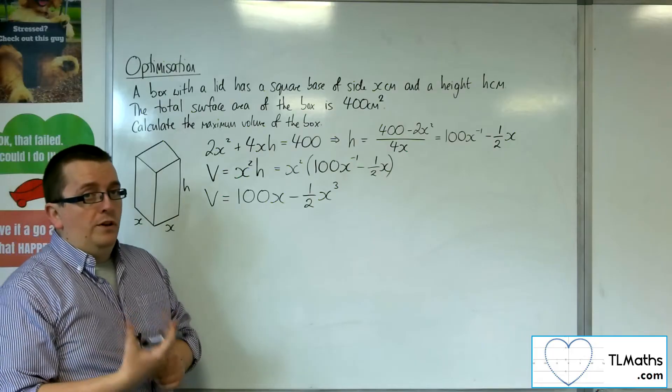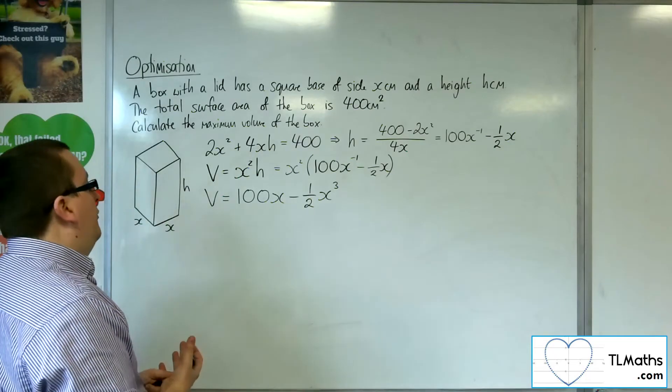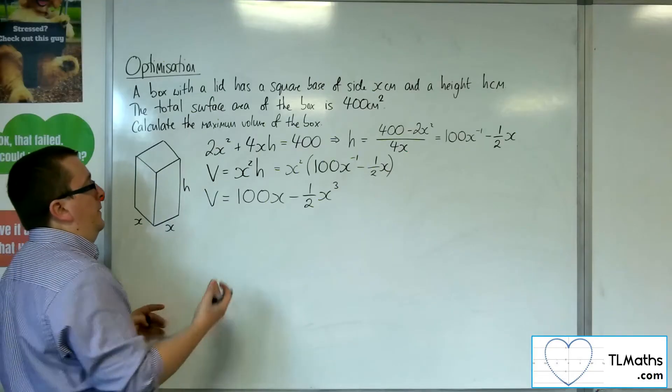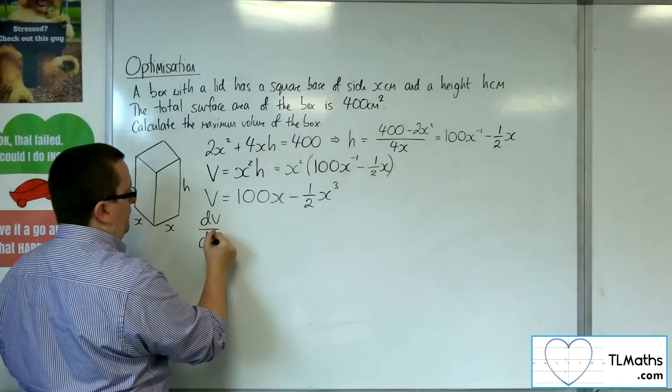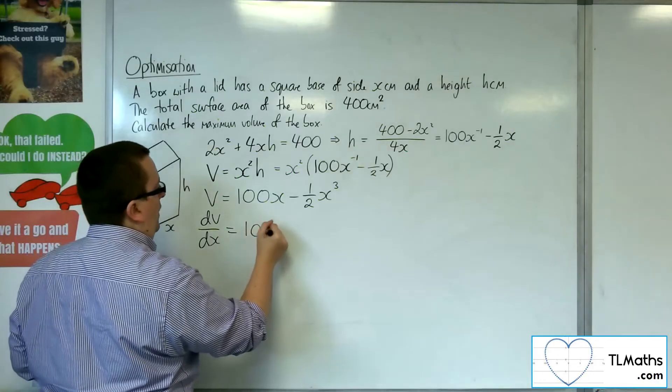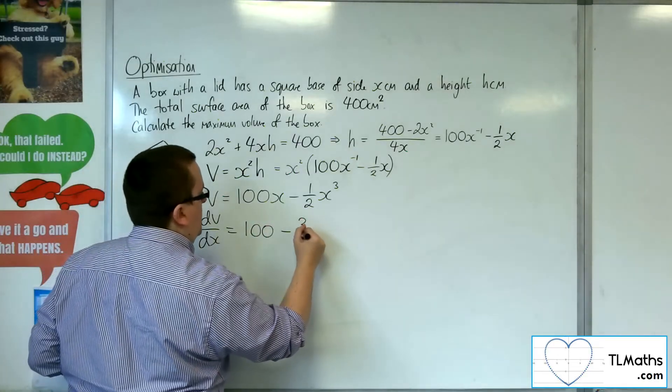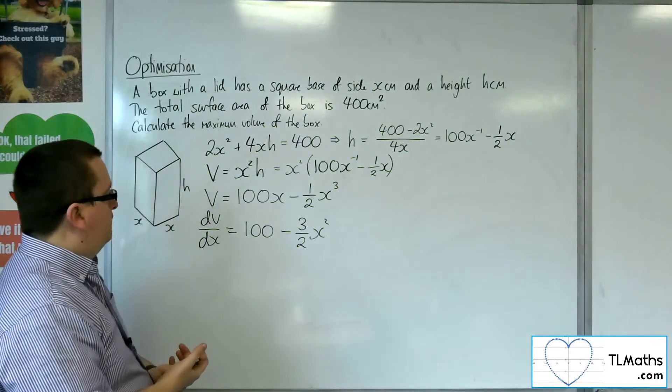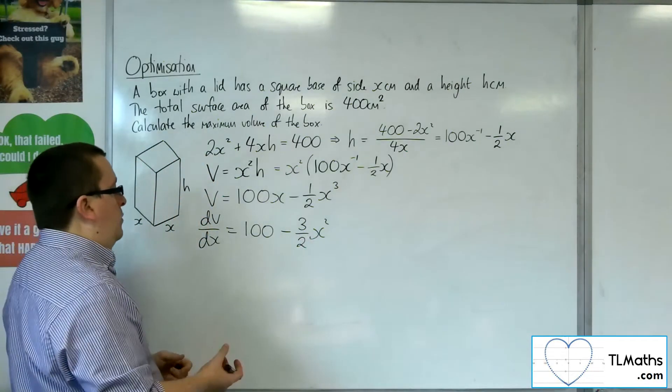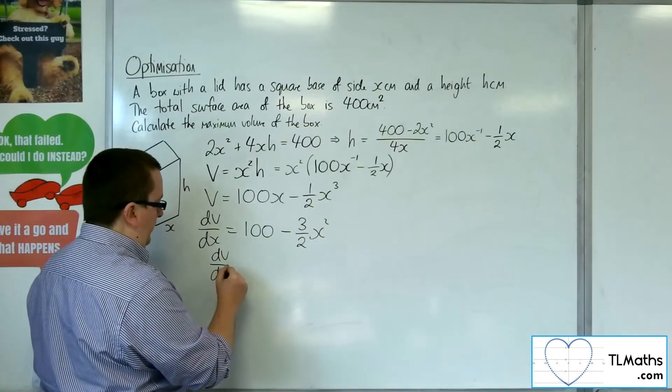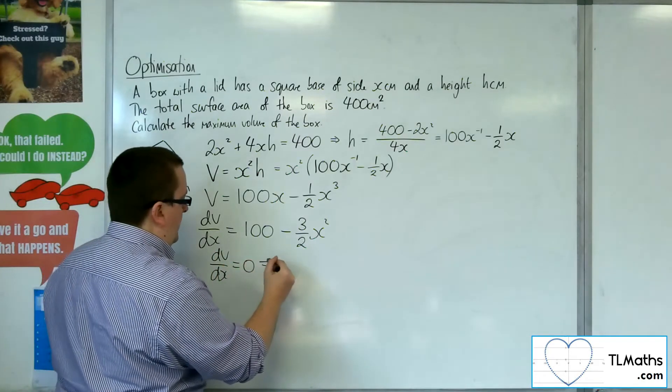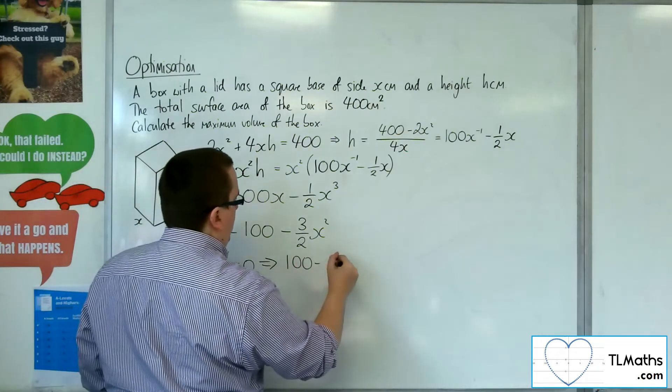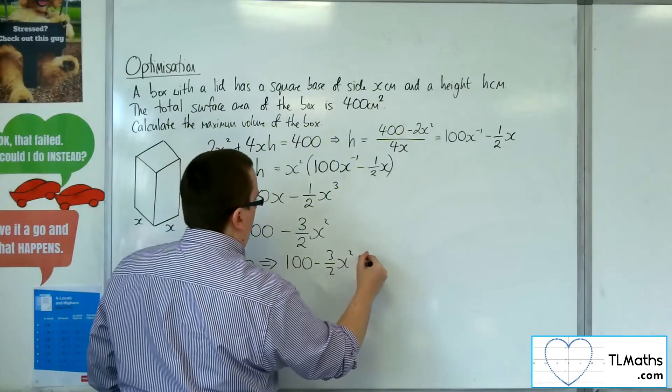Here is my equation for the volume. Now what I want to do is differentiate this because I want to find its stationary points. So dV/dx equals 100 minus 3 halves x squared. If I want to find the stationary points, I need to put that equal to 0. So 100 minus 3 halves x squared equals 0.